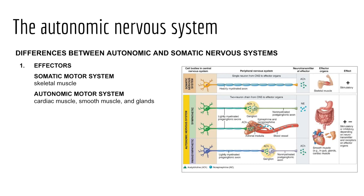The first difference between the autonomic and somatic nervous systems is that of effectors. In the somatic motor system, our effectors were skeletal muscles. In contrast, in the autonomic nervous system, our effectors are cardiac muscle, smooth muscle, and glands. When we consider the autonomic nervous system, we have two branches — most sympathetic branch activity targets glands, heart, and smooth muscle.